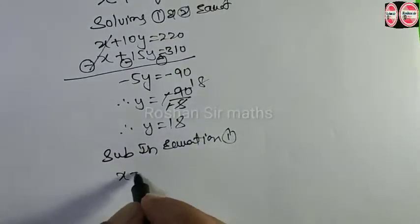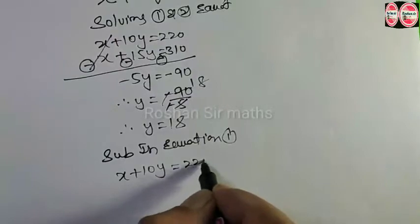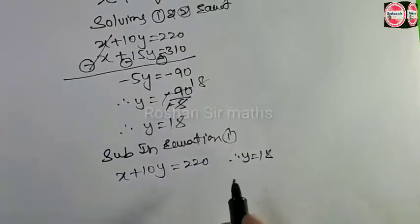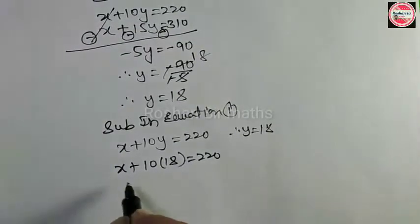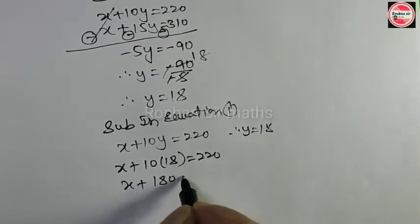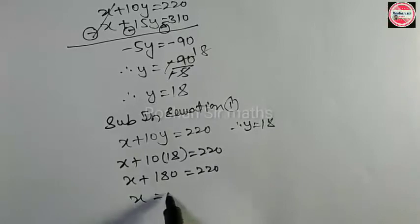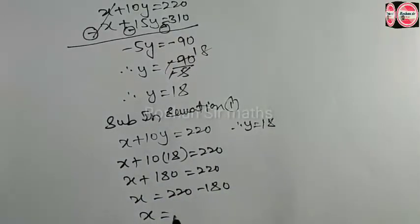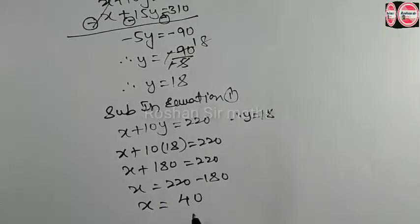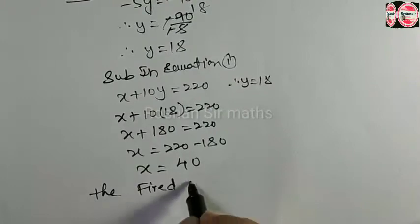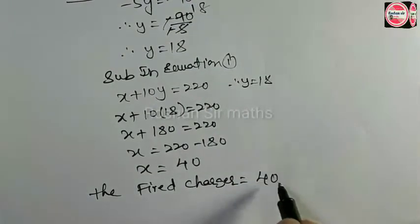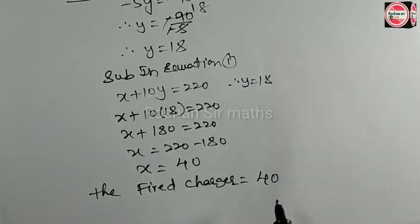Pehle wala equation hai x + 10y = 220. To y ki jagah hum 18 substitute kar sakte hain. To kya hoga: x + 10 × 18 = 220. X is equal to 220 minus 180 ho jayega. X is equal to 40. To yahan par jo x hai woh fixed charges hain — fixed charges is equal to 40 rupees.